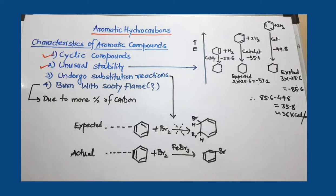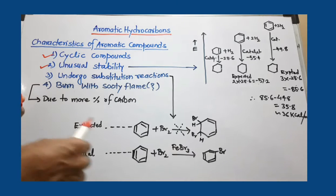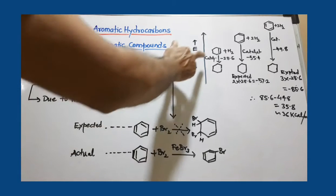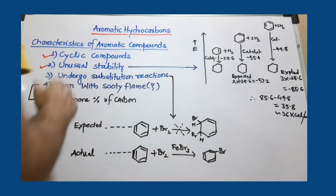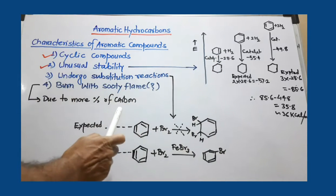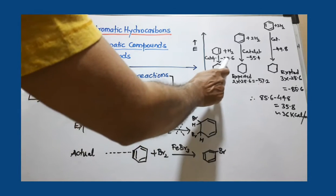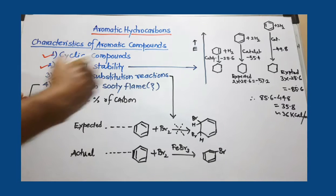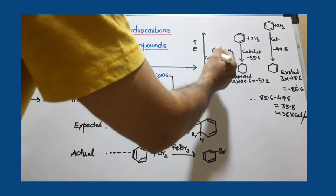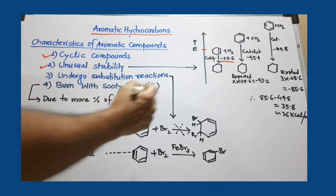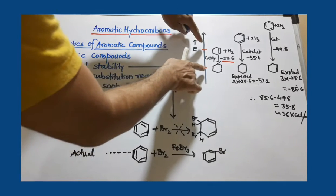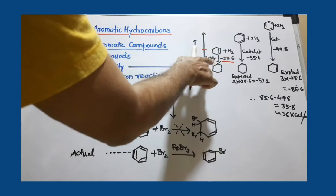Let me give an example of the meaning of unusual stability. Any compound which has more energy is an unstable compound. Consider cyclohexene, which has a single double bond. When we add hydrogen in the presence of a catalyst like Pd/C, we get cyclohexane. This reaction is exothermic, where minus 28.6 kilocalorie per mole of energy is liberated. So this energy difference represents the energy released during this conversion.